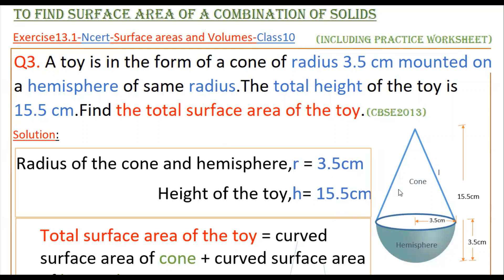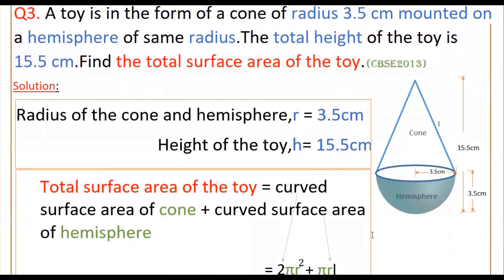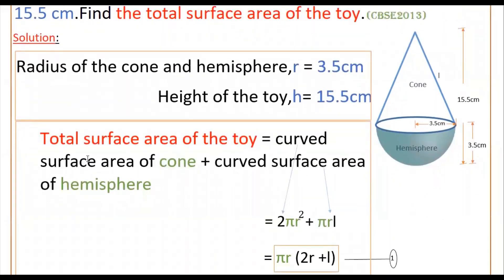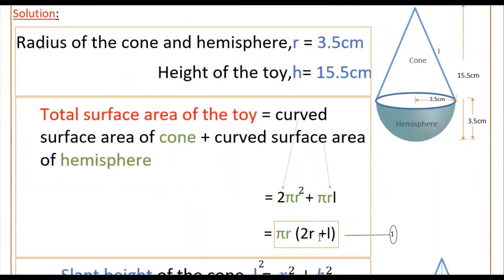The total surface area of the toy equals the curved surface area of the cone plus the curved surface area of the hemisphere. The formula gives us πrl for the cone and 2πr² for the hemisphere. Since πr is common, we can factor it out: πr(l + 2r). We know π and r, but we still need to find l, the slant height of the cone.